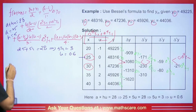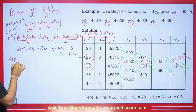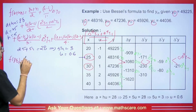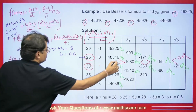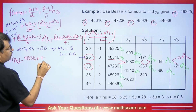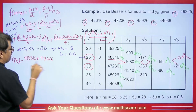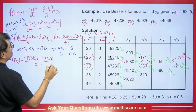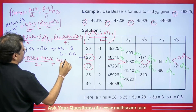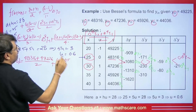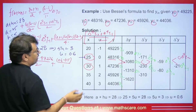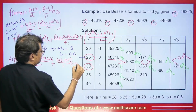So F(28) equals: first the average of Y0 plus Y1, which is 48316 plus 47236 divided by 2. Then plus (U minus 1/2) upon 1 factorial times del Y0. U is 0.6, so 0.6 minus 0.5, divided by 1, times del Y0 which gives us 1080.